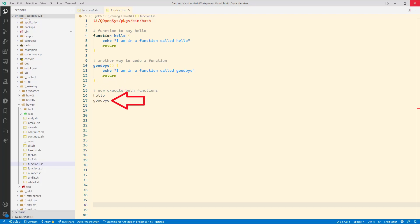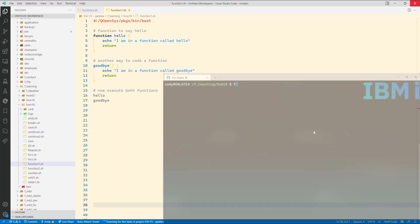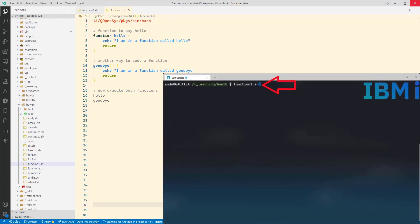And now moving on to give it a test. Type in function one dot sh. And there we go. I am in a function called hello. I am in a function called goodbye. It's that easy.